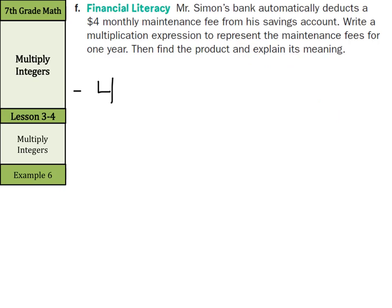so that's a negative 4. Times 12 months in a year is going to equal 48. But wait, it's negative 48 because a negative times a positive is a negative.